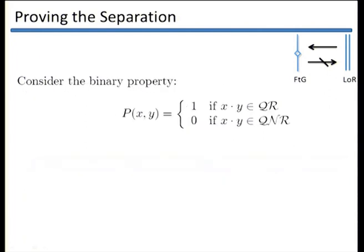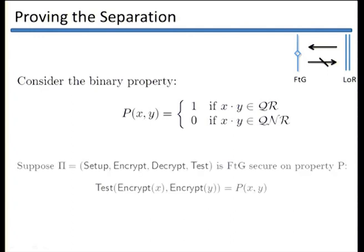The property that our scheme Pi preserves is similar to this theorem. It takes two messages X and Y and outputs 1 if and only if their product is a quadratic residue. We assume that Pi is FTG-secure on this property P.